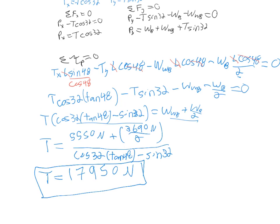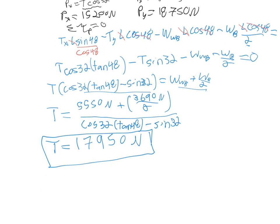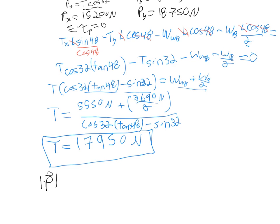Now you're almost done, but we forgot that we also need to find the magnitude of the force at P. So we can come up here, plug in, take our tension times the cosine of 32, and we should find that Px comes out to be about 15,200 newtons. Doing the same, Py comes out to be equal to 18,750 newtons. And so to find my magnitude of P, it's going to be equal to the square root of Px squared plus Py squared. Plugging in those two values, this should come out to approximately 24,000 newtons.